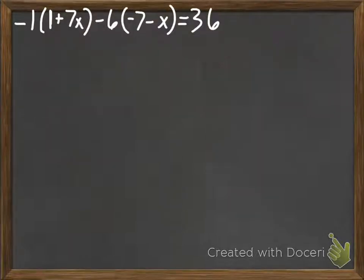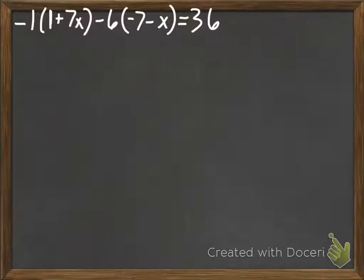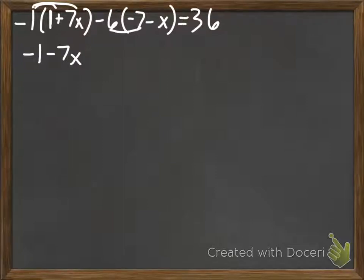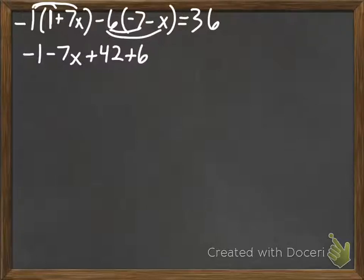The last example I'm going to work through with you. This one does not have variables on both sides, but it does have two distributive properties — that's why I wanted to do it with you. We're going to distribute first: negative 1 times negative 1 is negative 1, and negative 1 times 7x is negative 7x. Then distribute here: negative 6 times negative 7 is positive 42, and negative 6 times negative x is positive 6x, equals 36.